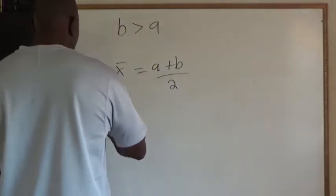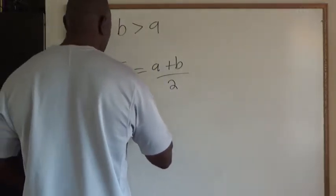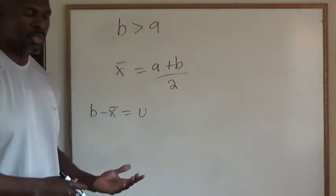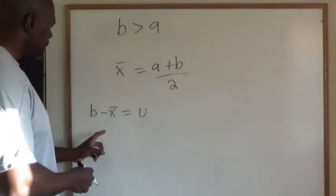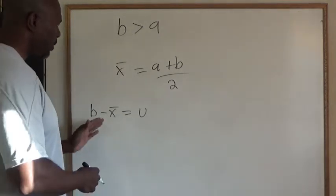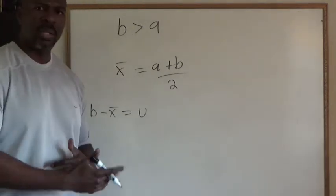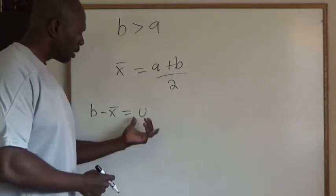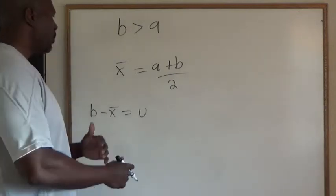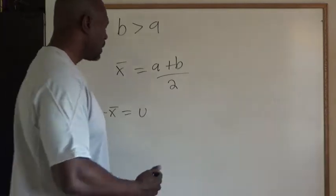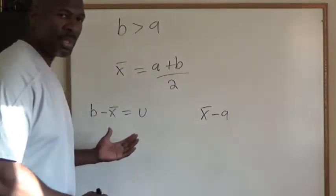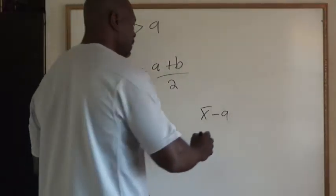So B minus X bar, I want to call that value U. That's actually what we called it in the first video. So B is the bigger number, so B is theoretically greater than the mean. And so B minus X bar is U. Now I want to see if X bar minus A is the same thing. So right now I don't know, so I'll call the value K.